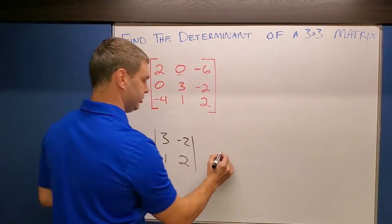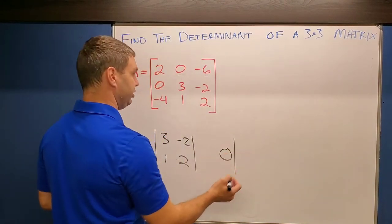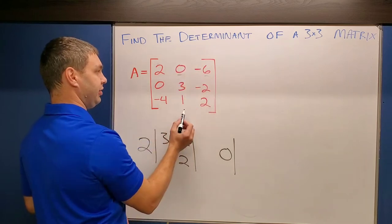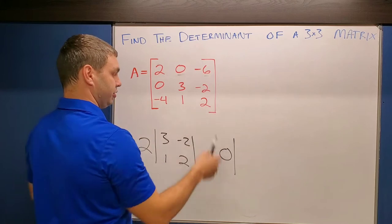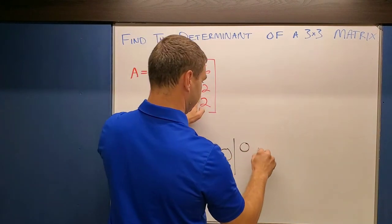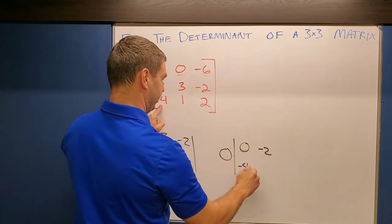And then I'm going to move on to zero and use the cross out method for that one. If I cross out this top row and this middle column, I'm left with zero, negative two, negative four, two.